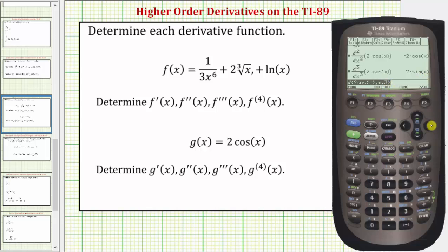Finally, to find the fourth derivative, we change the three to a four — right arrow, left arrow, backspace, four, Enter. Notice how the fourth derivative is equal to two cosine x, which is also the same as the original function g of x. I hope you found this helpful.